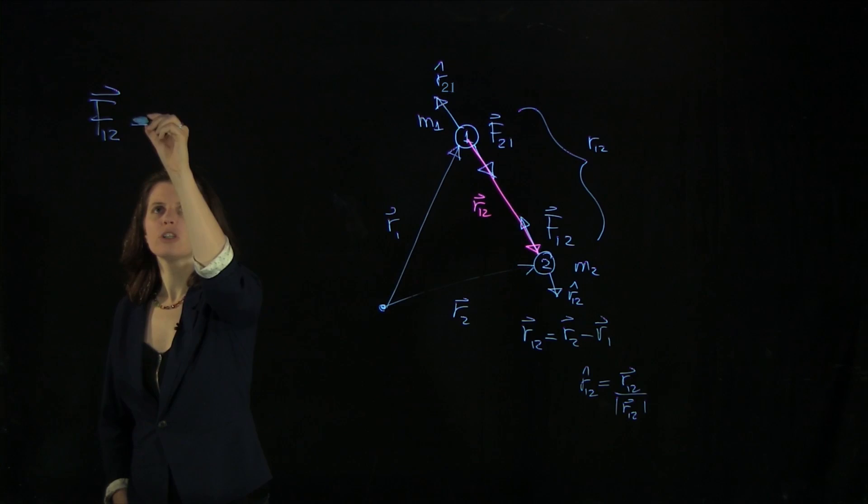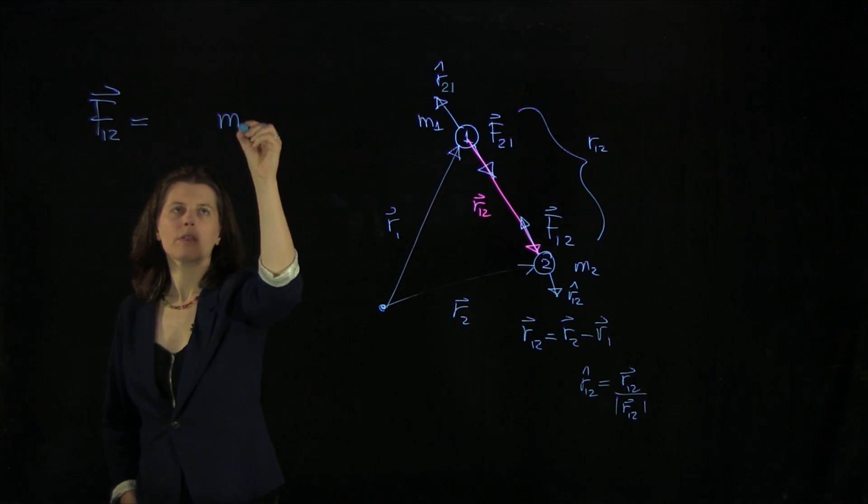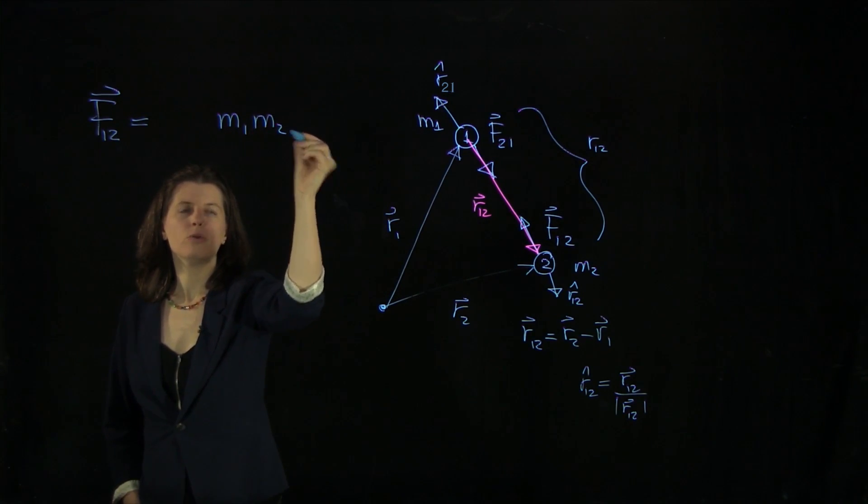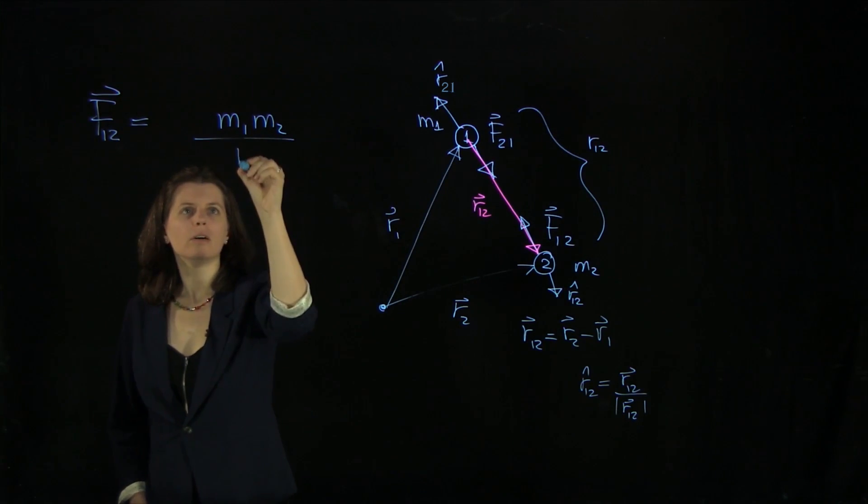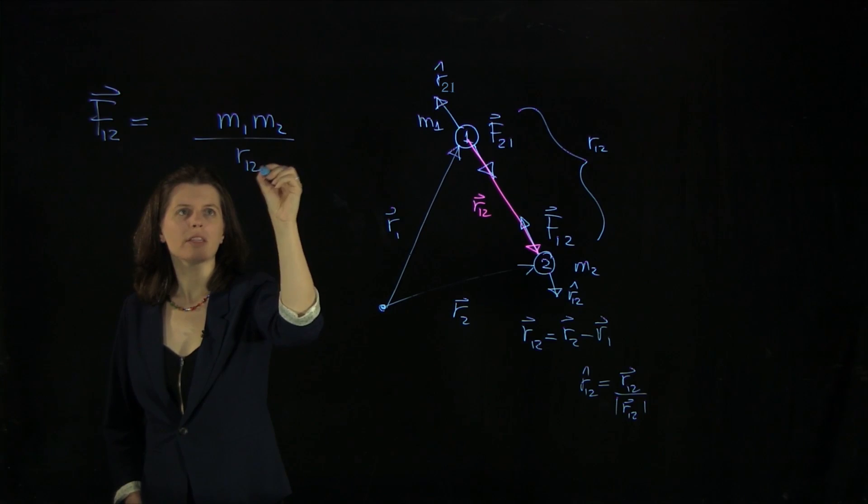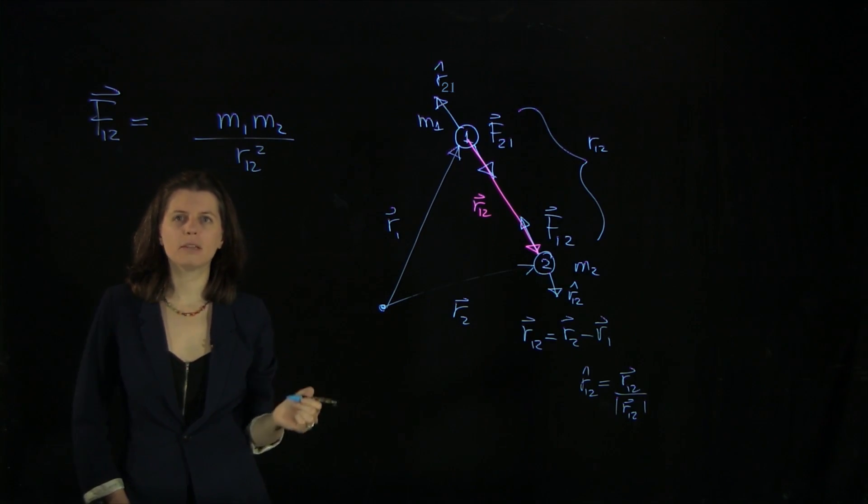It is proportional to the mass of the two objects. We already said that in the beginning. And the square of the distance between the two objects.